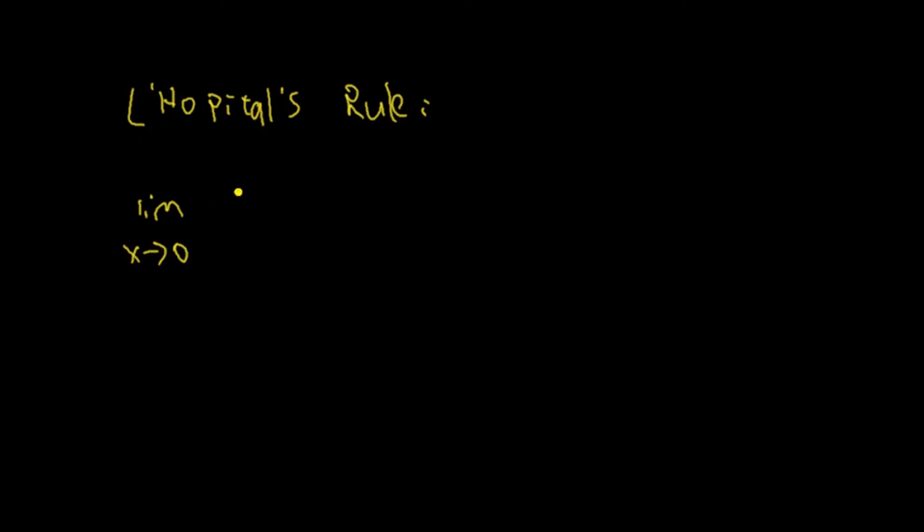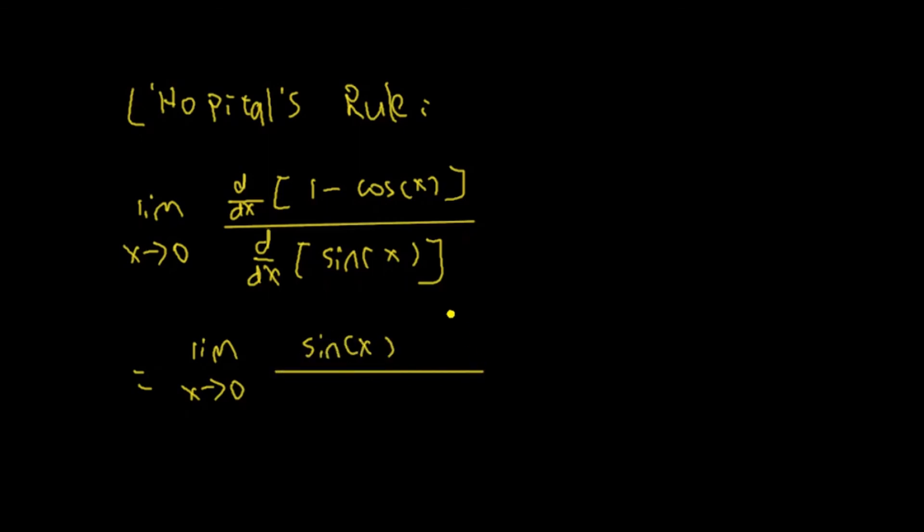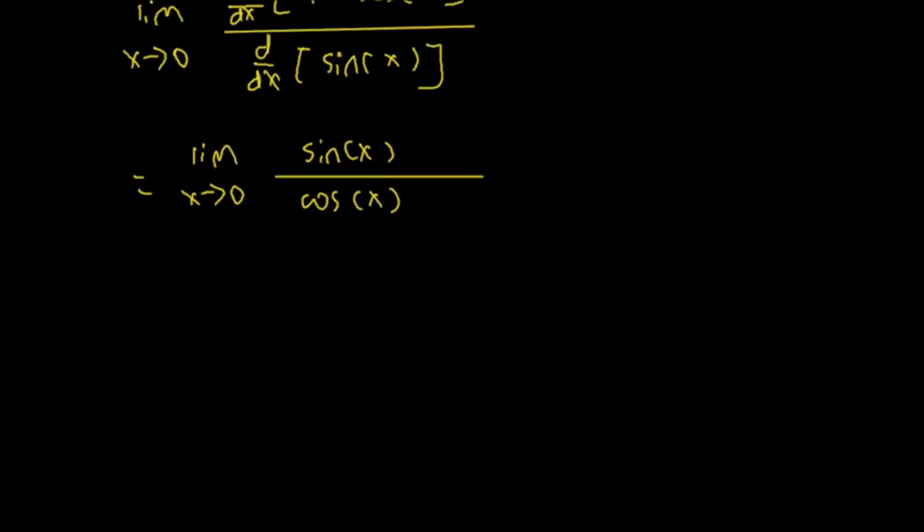That means I have to do this. Limit as x approaches 0. I take the derivative of the numerator, which is 1 minus cosine of x, over the derivative of the denominator, which is sine x. Limit as x approaches 0, the derivative of 1 is 0. The derivative of cosine of x is negative sine x. But minus and negative sine x is positive sine x. Over, the derivative of sine x is cosine of x.